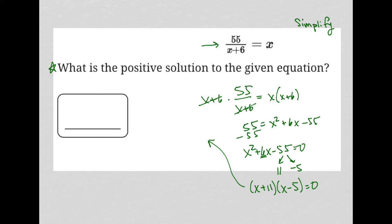Let's go up here for more space. So the solutions to this would be x plus 11 equals 0, in which case we get x equals negative 11, and x minus 5 equals 0, in which case we get x equals positive 5. The question wants the positive solution, so it's x equals 5. So our answer here is 5.